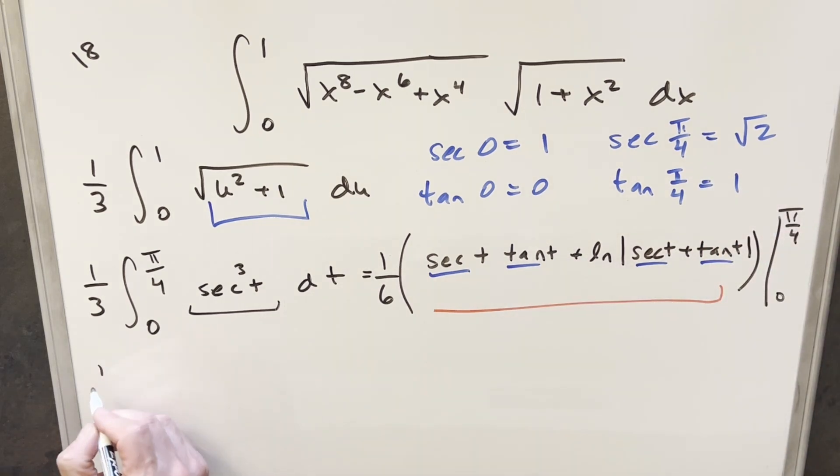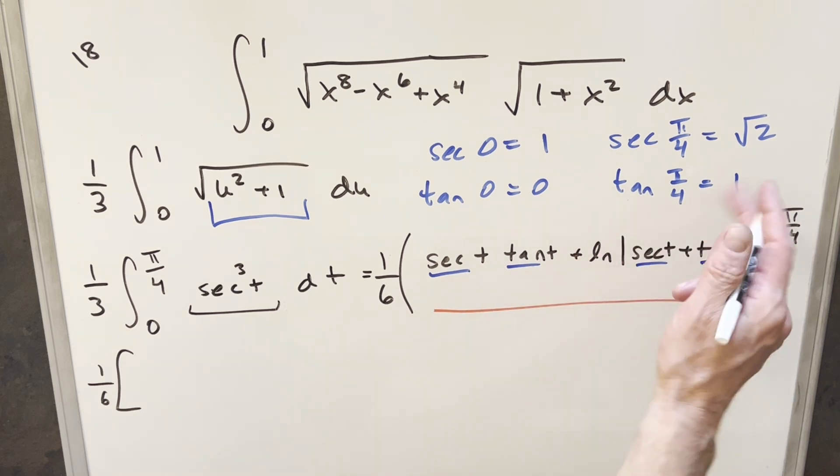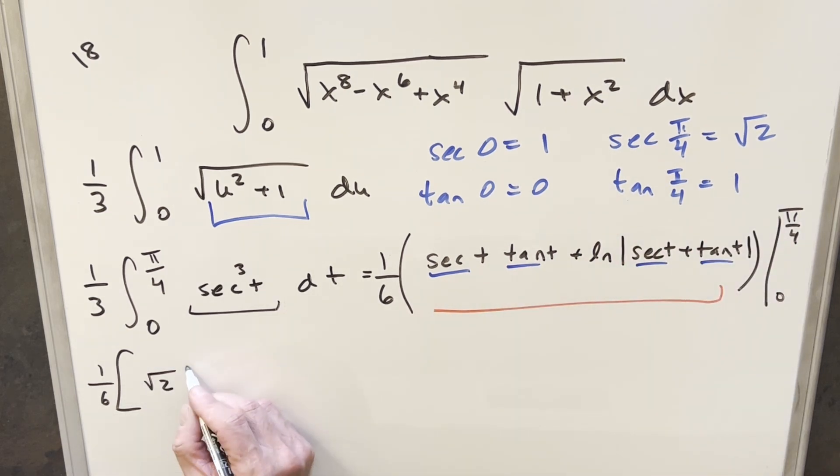So with that, we have everything we need. We're going to have our 1 over 6 out front here, and then we'll just kind of plug in. So secant pi over 4, we're going to have for the first part, square root of 2. Tan pi over 4 is going to be a 1 here. And then we have plus,